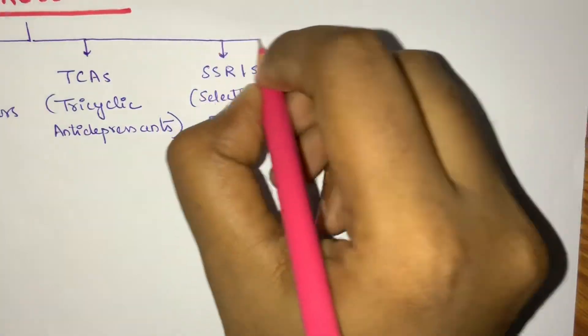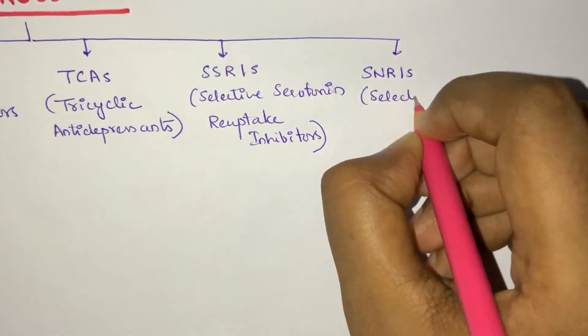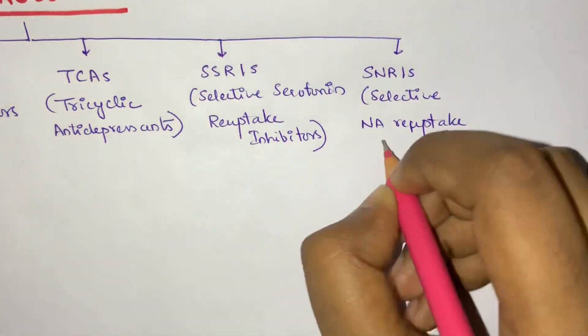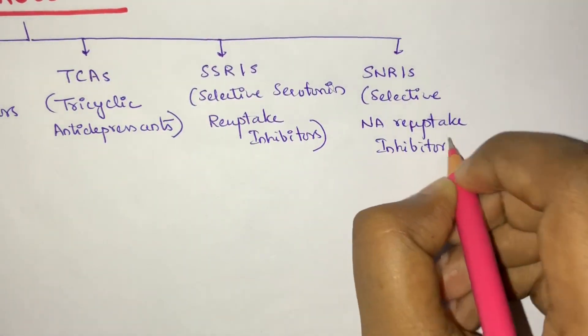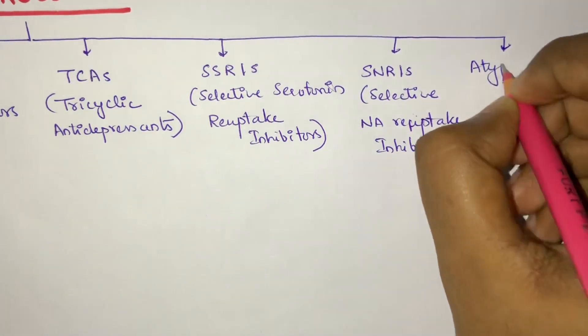And the next classification is SNRIs, that is selective noradrenaline reuptake inhibitors. And the final classification is atypical antidepressants.